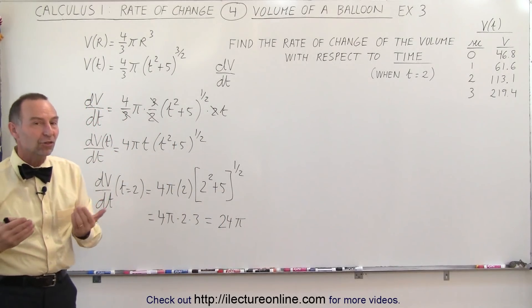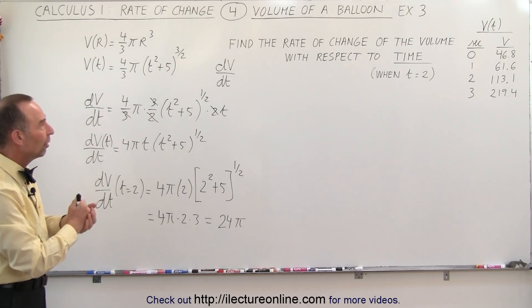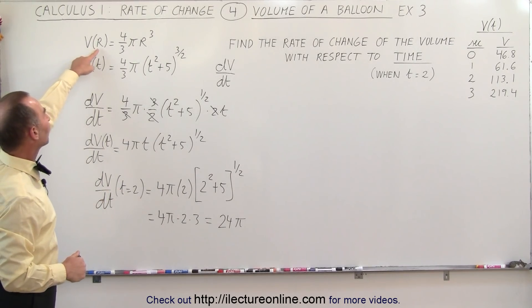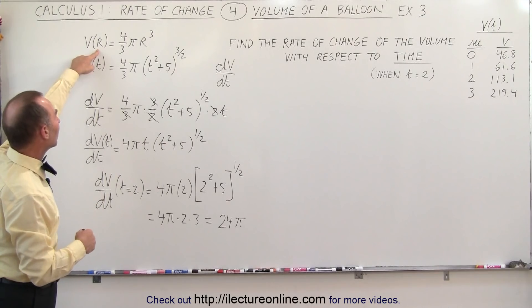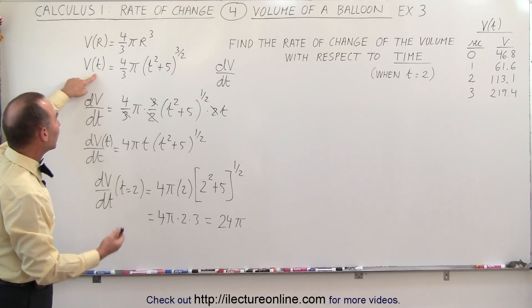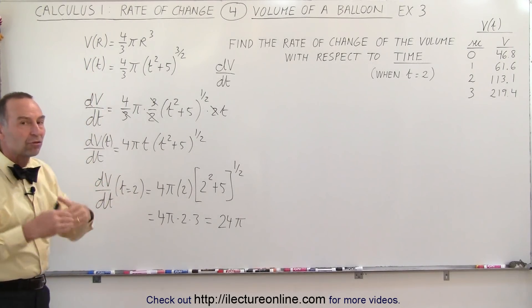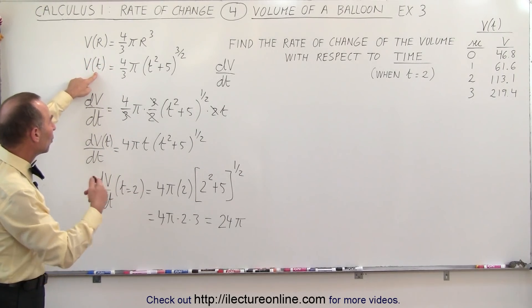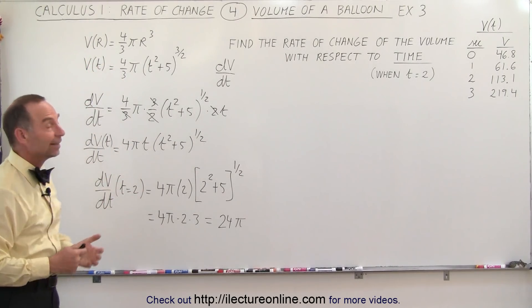Again, understand when we ask for different rates of change: if we have this equation, we can find dv/dr; if we have this equation, we can find dv/dt—the rate of change of the volume with respect to the radius versus the rate of change of the volume with respect to time. And that's how it's done.